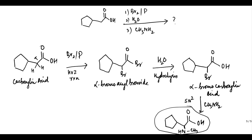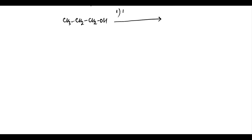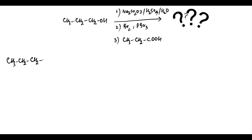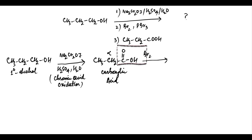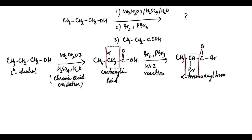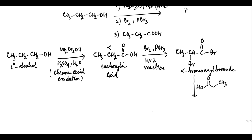Let us find the product formed by subjecting this primary alcohol to chromic acid oxidation, followed by bromination via HVZ reaction, then treatment with a carboxylic acid. The primary alcohol undergoes chromic acid oxidation to form the corresponding carboxylic acid, which has alpha-hydrogens. Treatment with Br2 and PBr3 undergoes HVZ reaction to form alpha-bromoacyl bromide. The alpha-bromoacyl bromide on treatment with the acid leads to formation of an acid anhydride derivative, with bromine in the alpha position unaffected.